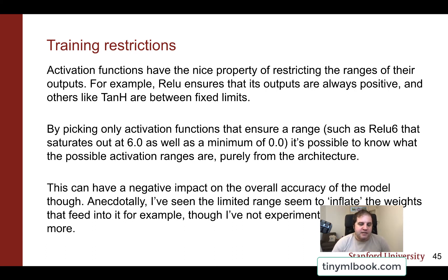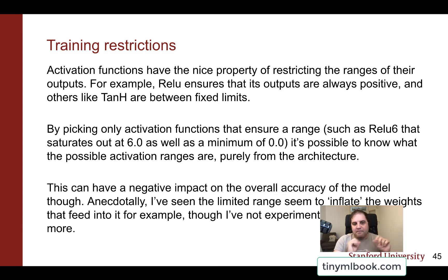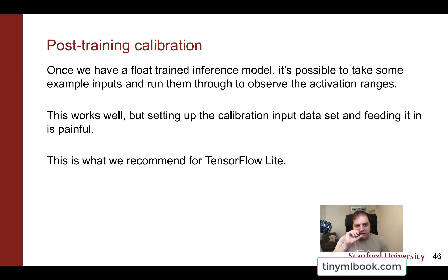Activation functions like TanH naturally have their own fixed limits too, so if you're already using them, you can tell what the activation range is. The most commonly recommended approach with TensorFlow Lite is actually using post-training calibration — you run through some representative example inputs and observe what the activation ranges actually are. This does work well. I always struggle a bit because I have to put together a calibration input dataset and feed it in. But once you've done that, it works really well and you can get a very nicely quantized model out of the other end.